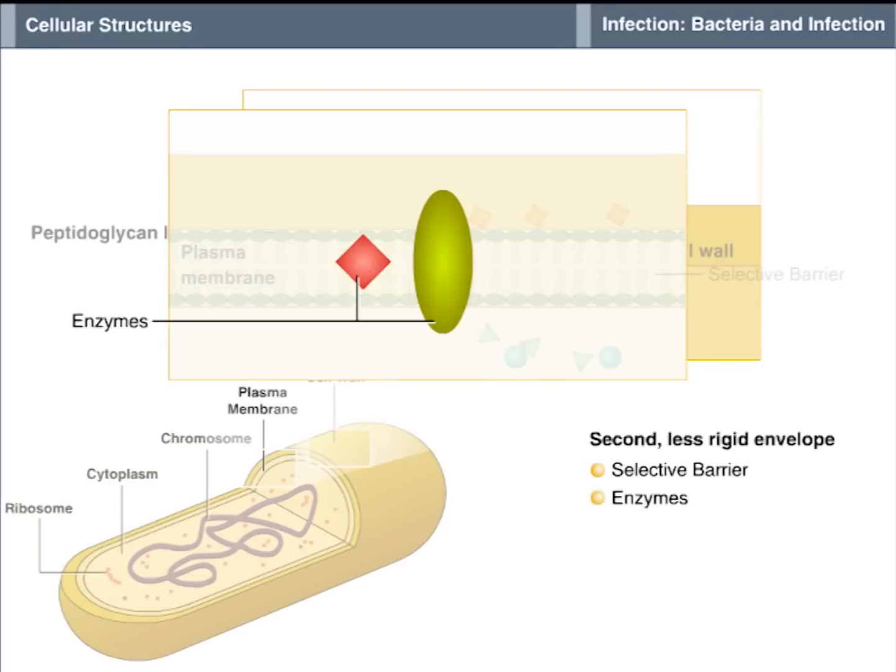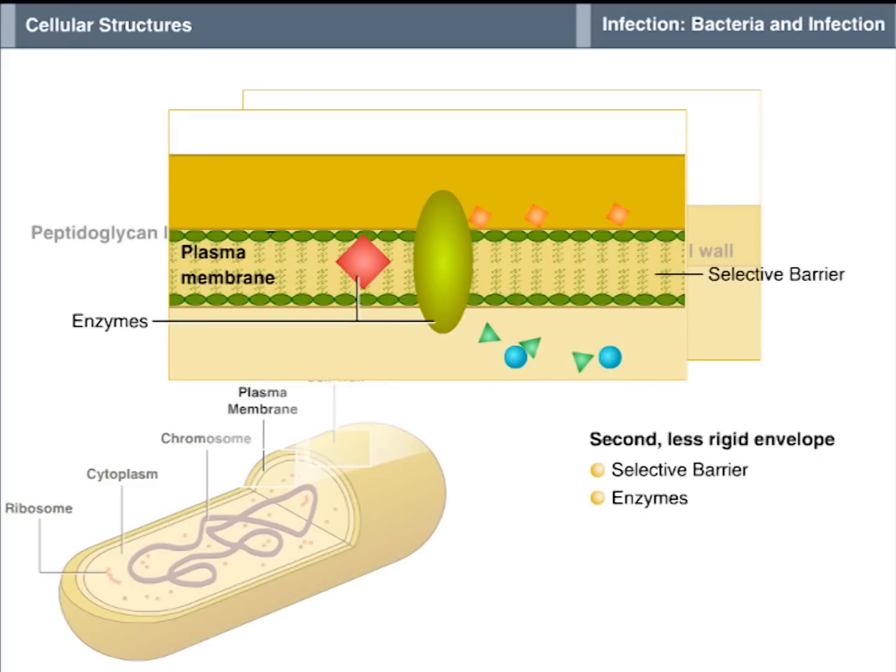Second, the plasma membrane contains enzymes, proteins that cause chemical reactions to occur, that are vital to the life functions of the cell.